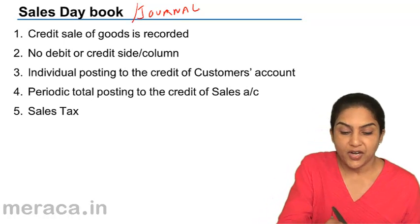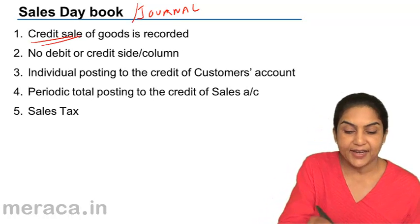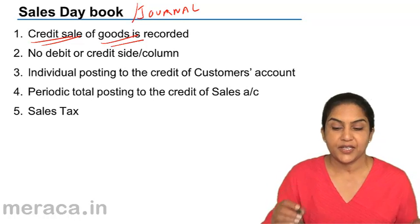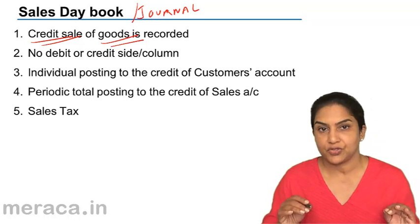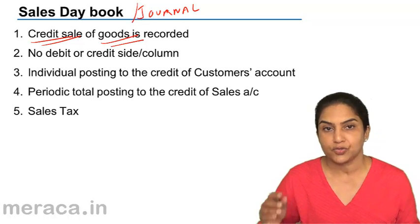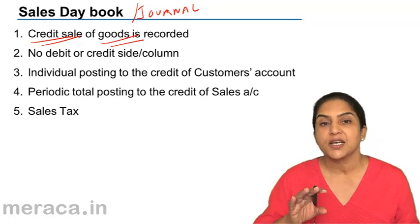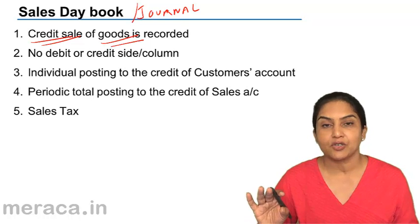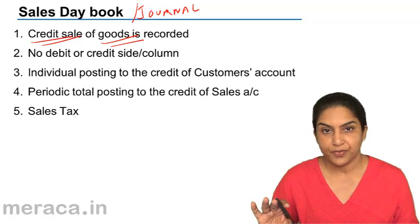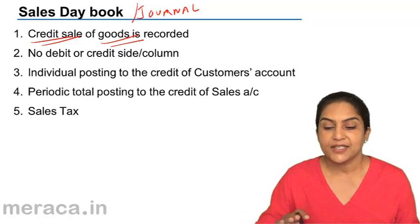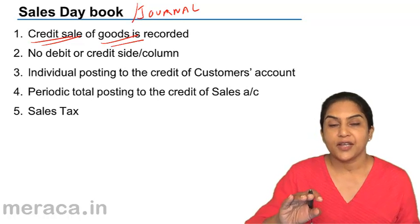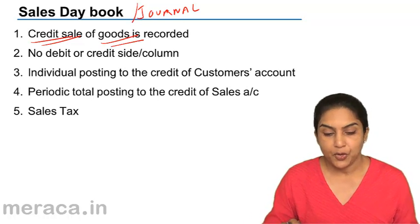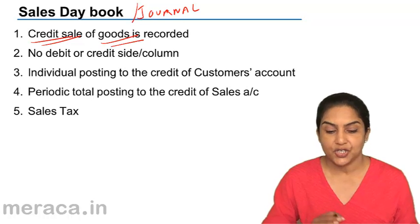What does it record? Credit sale of goods. Goods which we purchase to sell — so when we are selling our goods, the credit sale of goods is recorded in the sales book, also called the sales day book or sales journal.